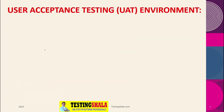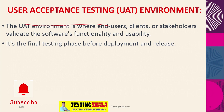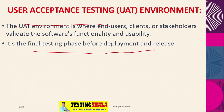The next type of environment is the user acceptance testing environment. User acceptance testing is performed by the end user or customer, where the end user uses their own environment to test the software. It is done by the end user, client, or stakeholders who validate the software's functionality as well as usability. Normally, UAT is done before deploying to the release.